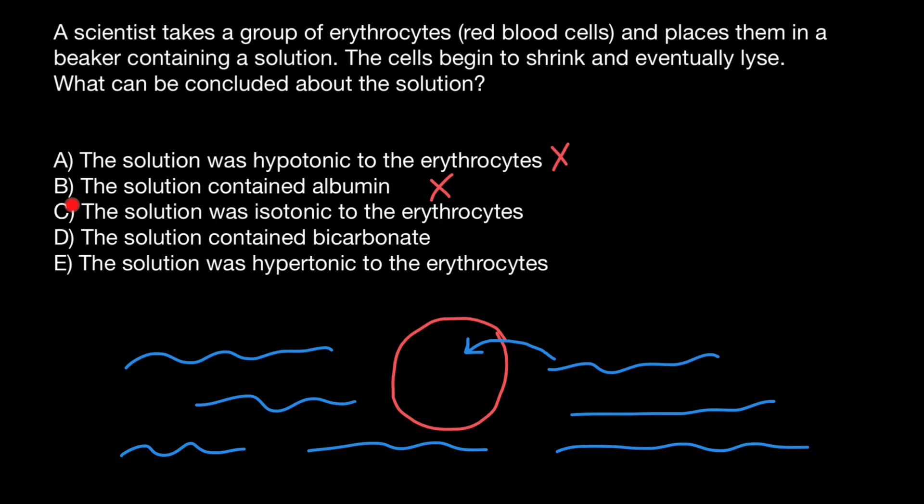Next variant C: the solution was isotonic to the erythrocytes. What does isotonic mean? Isotonic means that blood serum has the same osmotic pressure as osmotic pressure inside of the red blood cells. Of course, if osmotic pressure inside of the cell and outside of the cell is going to be the same, nothing is going to happen to such red blood cell. So this is also wrong statement.